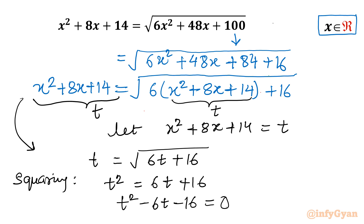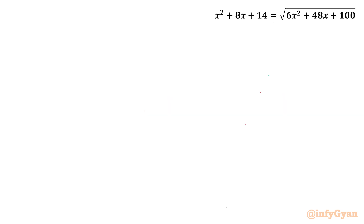Let us solve this quadratic equation first: t² - 6t - 16 = 0.